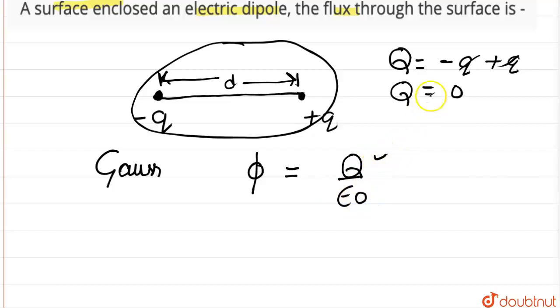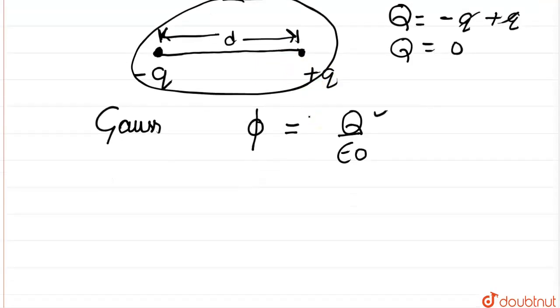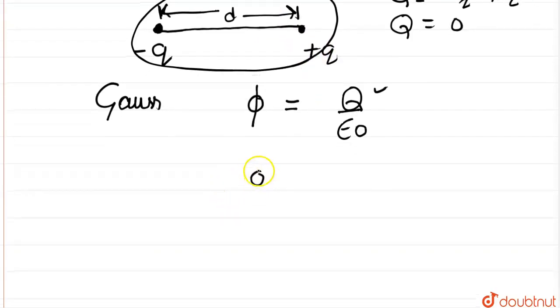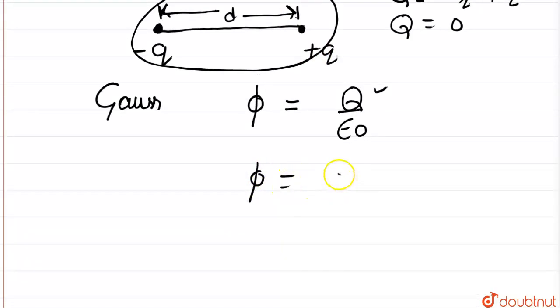Now, in this case, the net charge q is zero because the net charge of a dipole is zero. So the flux would also be equal to zero.